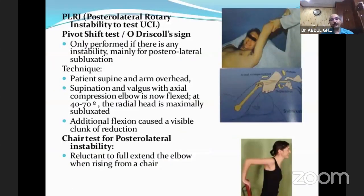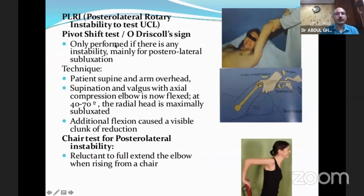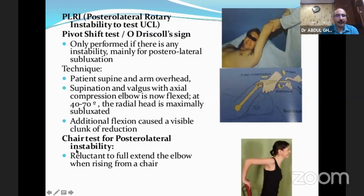If the valgus stress test is positive, proceed to the posterolateral rotatory instability test — also called the pivot shift test or O'Driscoll's sign. Technique: patient is supine, arm is overhead in supination, valgus with axial compression is applied as the elbow is flexed to 40 to 70 degrees and the radial head is maximally subluxated. Additional flexion causes a visible clunk of reduction. This can also be tested by asking the patient to hold a chair and turn back toward it — reluctance to fully extend the elbow indicates posterolateral instability.